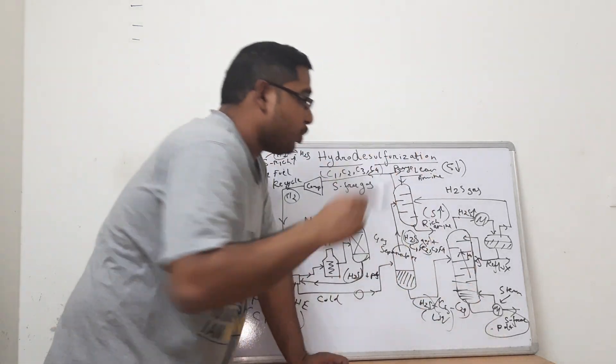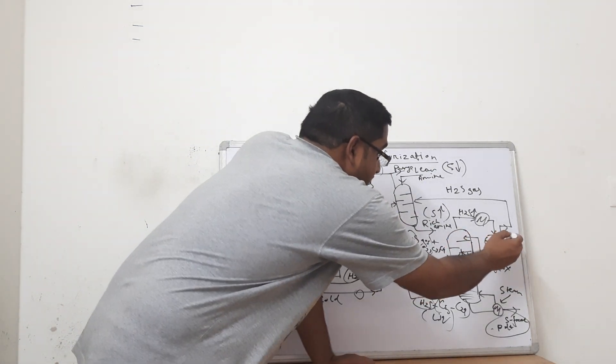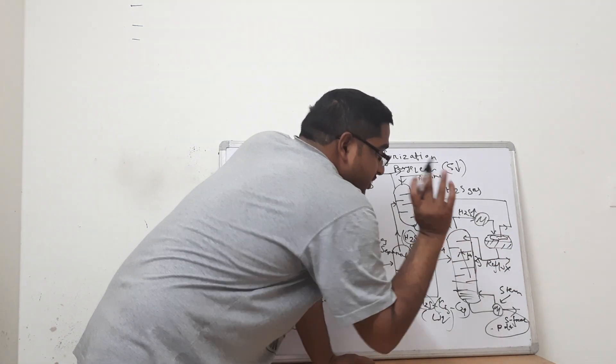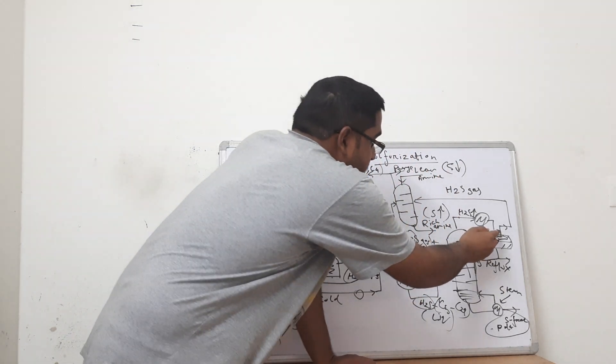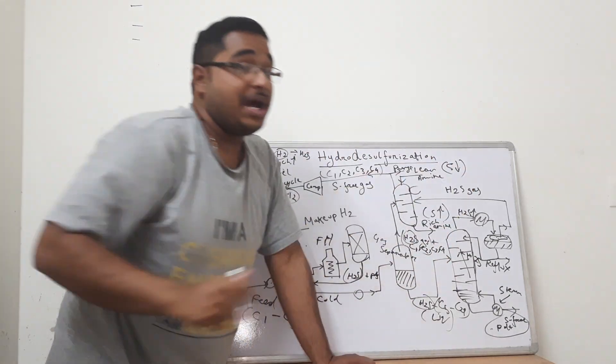Whereas we get a sulfur free product at the bottom. This H2S that we get further forms vapor at the top of the reflux drum and this vapor is being escaped out and is brought back into the amine chamber or purged out directly.